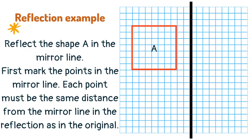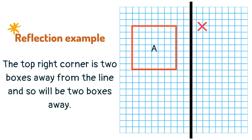Reflect the shape in the mirror line. First, mark the points on the mirror line — each point must be the same distance from the mirror line in the reflection as in the original. The top right corner is two boxes away from the line and so will be two boxes away in the reflection. Repeat for all the points of the shape.